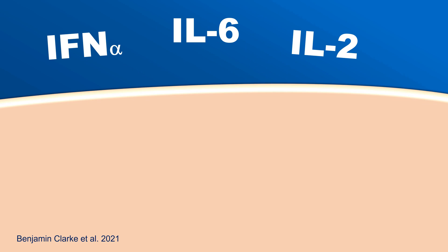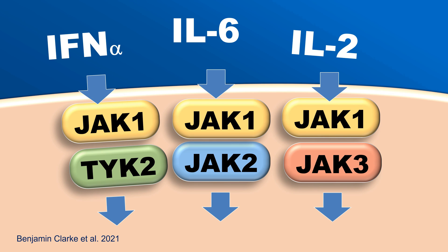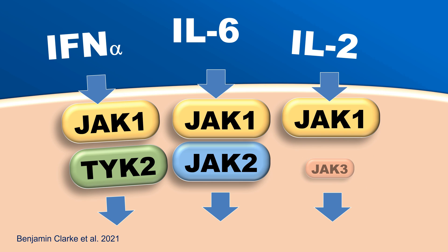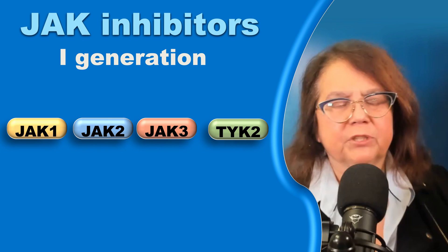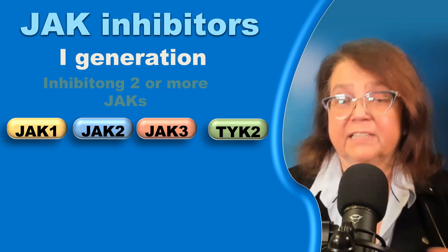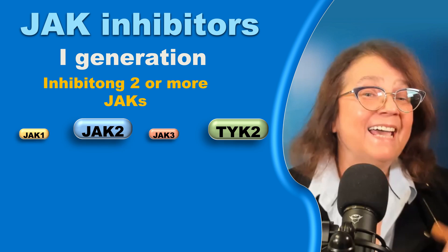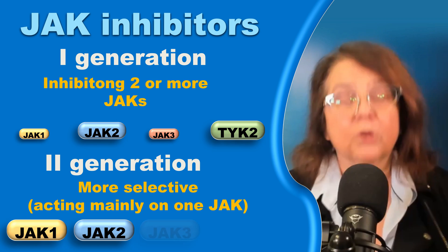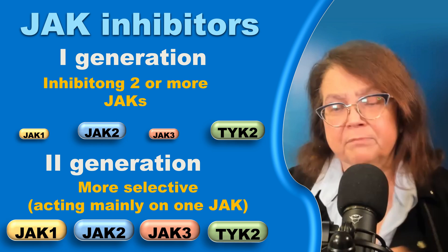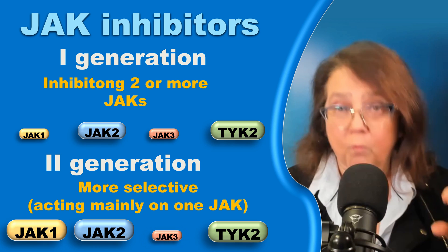This is a simplified illustration of how it works. There are pro-inflammatory cytokines that have an effect on the cell via the JAKs, and every cytokine will have an effect on the cell via a different set of JAKs. For example, if we use a JAK3 inhibitor and decrease the activity of JAK3, we achieve decreased interleukin-2 activity on the cell with minor or no effect on other cytokines. We can roughly divide JAK inhibitors into two generations: the first generation inhibits two or more JAKs, and the second generation is more selective, targeting primarily one JAK.